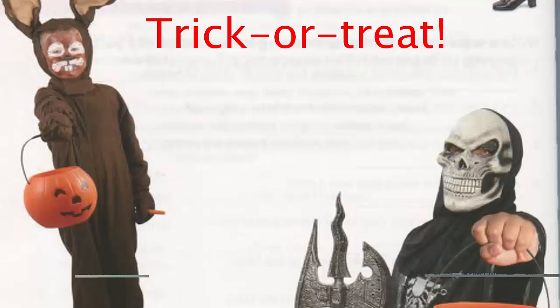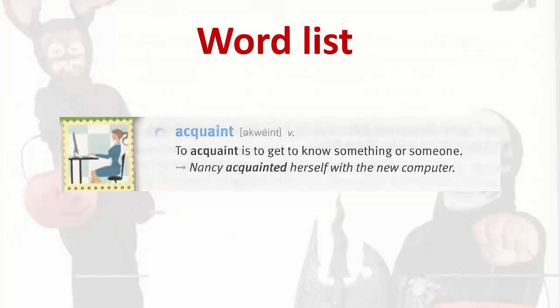Unit 5 Word List. Acquaint: to acquaint is to get to know something or someone. Nancy acquainted herself with the new computer.